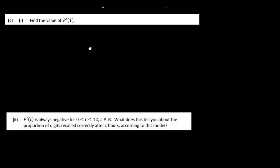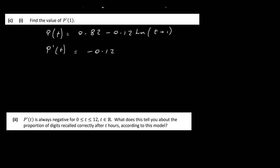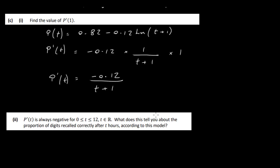We have to find the value of p′(1), so we need to differentiate. Our original function is p(t) = 0.82 − 0.12 log(t + 1). Differentiating: the constant 0.82 gives 0. The log function differentiates so that log(t + 1) becomes 1/(t + 1), and differentiating (t + 1) gives 1, so we multiply by 1. Therefore p′(t) = −0.12 / (t + 1).